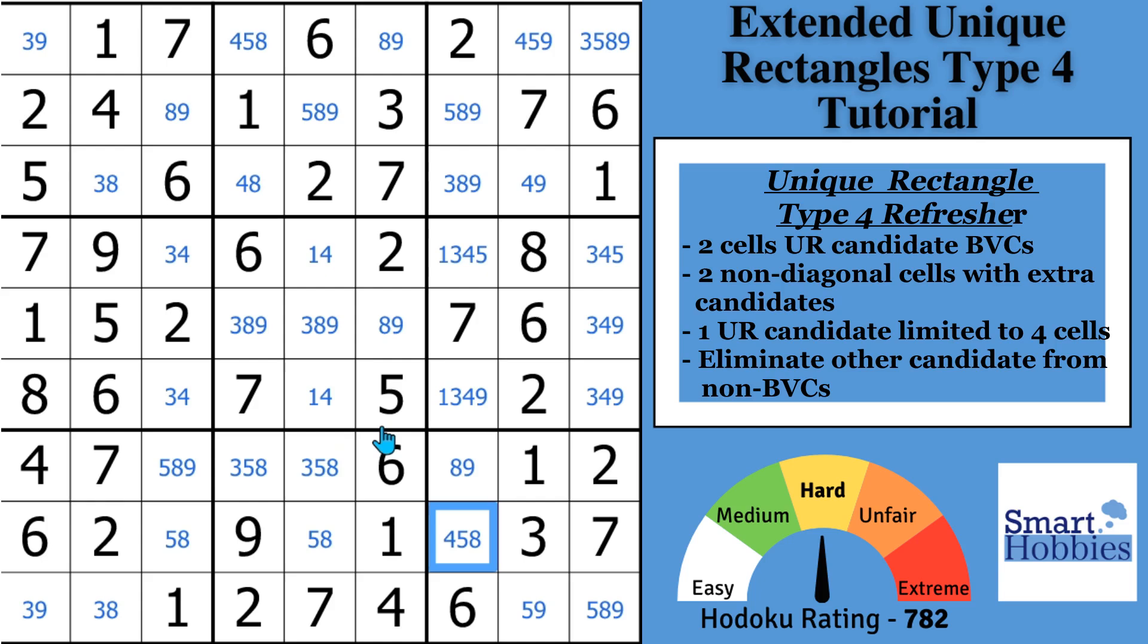So, unique rectangle Type 4. In this situation, you assume that a puzzle has a unique solution. And you're looking for 4 cells. In this case, it would be these 4 cells right here. Two of the cells are just unique rectangle bi-value cells. So you just have a 1-4 here and a 1-4 here.